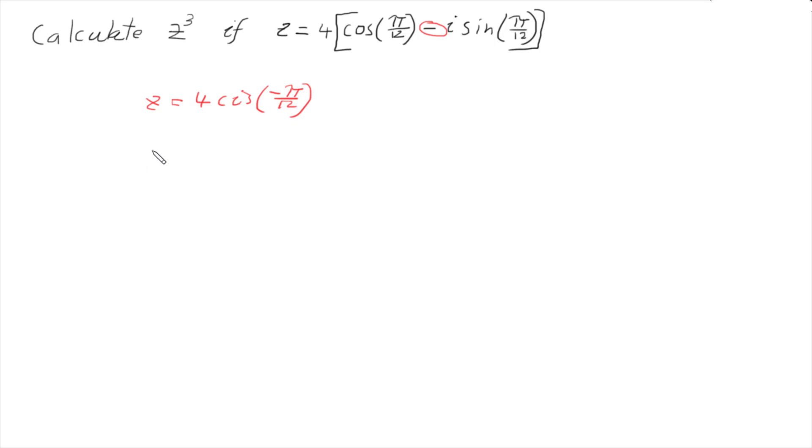So now I want to raise this to the power of 3. So z cubed is going to be 4 cis negative pi over 12 to the power of 3. And this means that I raise the magnitude to the power of 3.